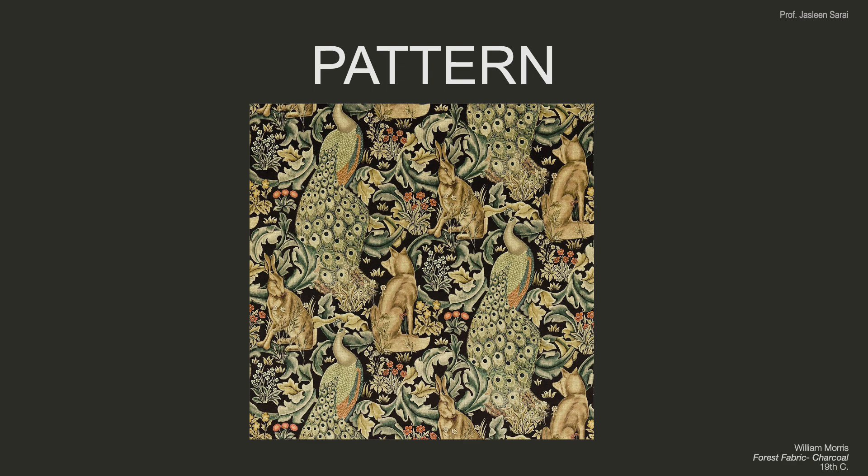This is a wallpaper by William Morris. You'll find a bunch of motifs here — peacocks, different kinds of flowers, a wolf, a rabbit, and more. When you start connecting these motifs together, you create lines that reveal the underlying pattern. It may not be a simple grid, but it's a more complex grid that allows repetition to happen. You can imagine this pattern extending to infinity in all directions.